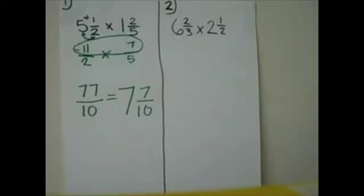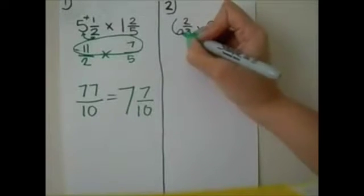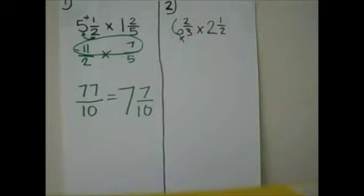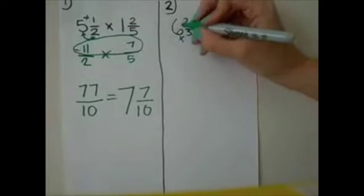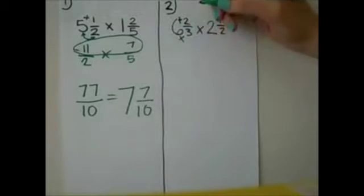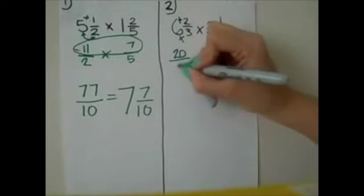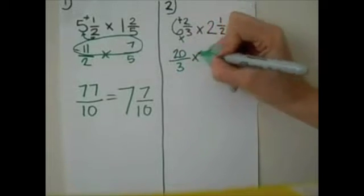So we have to make them into improper fractions. And we want to multiply 3 times 6, we want to put our little multiplication sign there, 3 times 6 is 18, and then plus the 2 up here, 18 plus 2 equals 20, so we want to put that here, and over the same denominator, so 20 over 3 times.